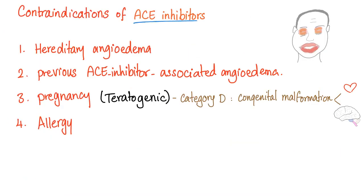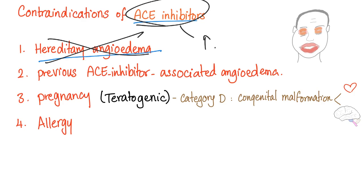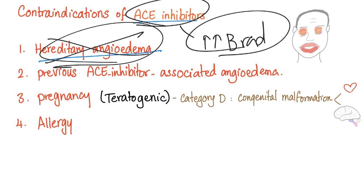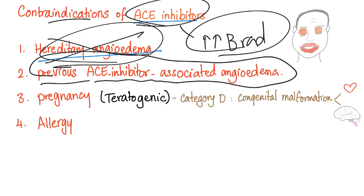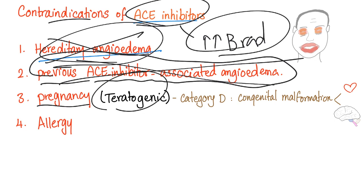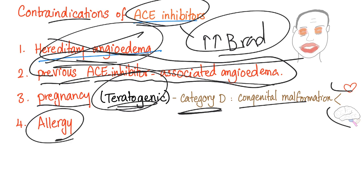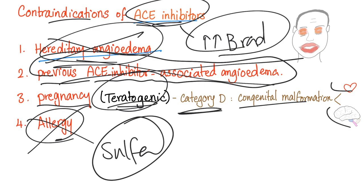Contraindications of ACE inhibitors: First, hereditary angioedema — because when you use ACE inhibitors you have lots of bradykinin, and people with hereditary angioedema already have lots of bradykinin, so don't add fuel to the fire. Second, previous ACE inhibitor-associated angioedema — if a patient developed angioedema on ACE inhibitors, don't repeat the mistake. Third, pregnancy — ACE inhibitors are teratogenic, pregnancy category D, and can cause congenital malformations in the CVS and CNS. Fourth, sulfur allergy — some ACE inhibitors contain sulfhydryl groups, so avoid them in sulfur-allergic patients.